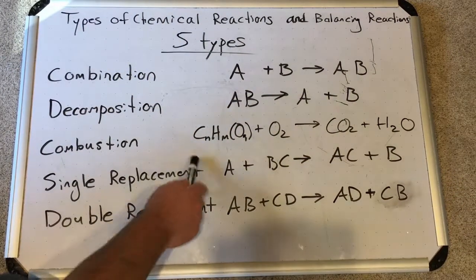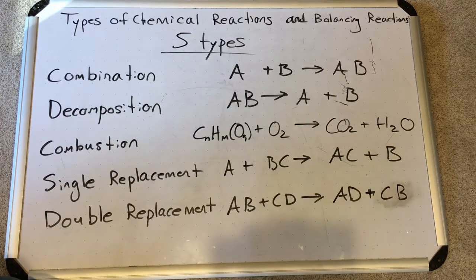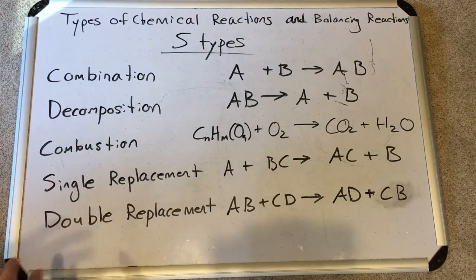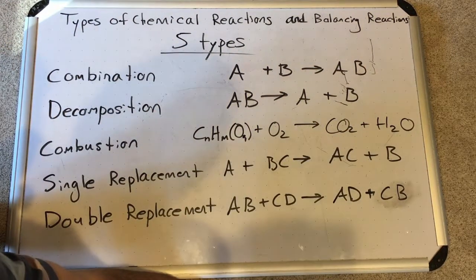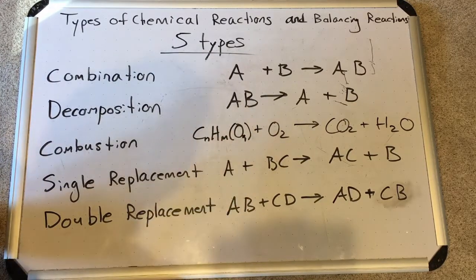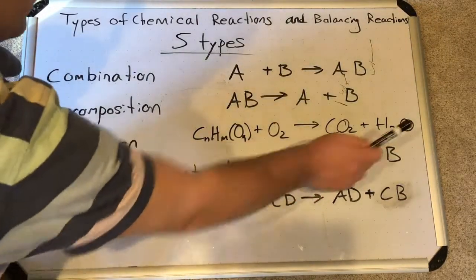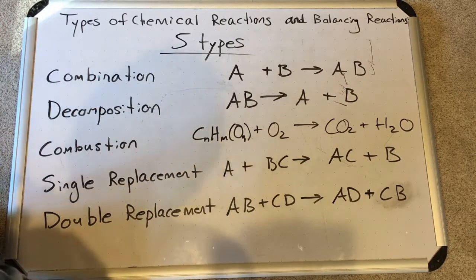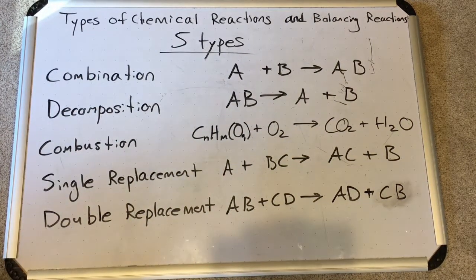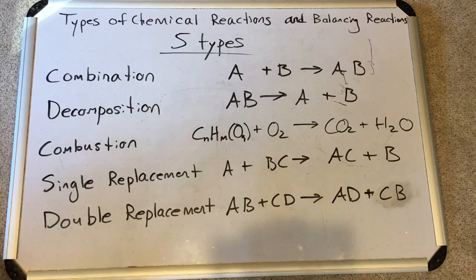Combustion is a very specific type of reaction. We can have a hydrocarbon or an organic compound that includes oxygen — such as glucose, fructose, sucrose, any of the sugars, alcohols, or any hydrocarbon with some oxygens. The O2 reactant and the CO2 and H2O products are not optional — they are always present in a combustion reaction. So combustion must have O2 as a reactant and CO2 and H2O as the two products, plus a hydrocarbon or organic compound with C, H, and O.